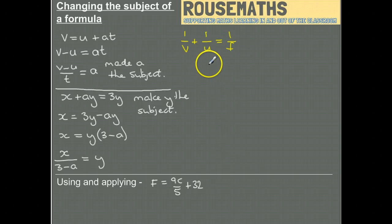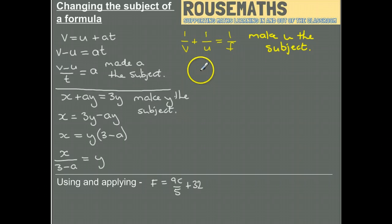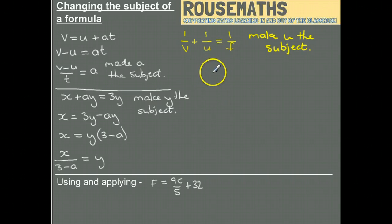The third one I've got is a bit trickier. What we want to do is make u the subject. Now u is a denominator, as are the other variables in this particular equation, and I'm first going to deal with that by trying to add fractions.